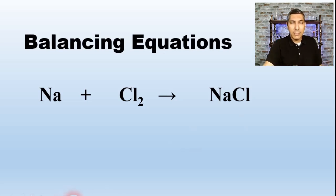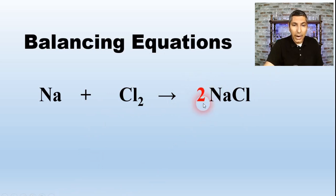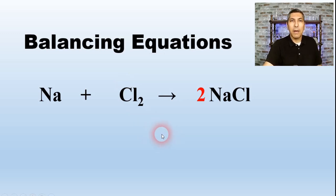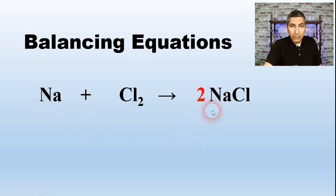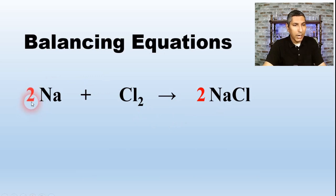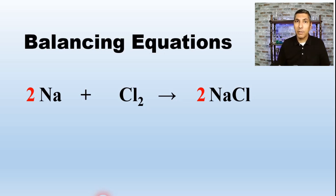So let's start with the chlorines. I'm going to put a coefficient of 2 right here in front of the NaCl. That way I can multiply everything in NaCl by 2, so I now have 2 chlorine atoms on the right side and 2 on the left side — the chlorines are balanced. But by balancing the chlorines, I've also messed up the sodium count: 1 on the left but now 2 on the right. So I put a coefficient of 2 in front of sodium, and now we have a balanced equation. The goal is to place coefficients such that the number of atoms of each element is the same on both sides.